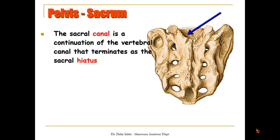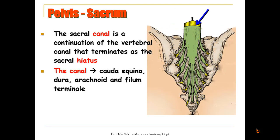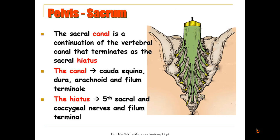The sacral canal is a continuation of the vertebral canal that terminates at the sacral hiatus. The canal transmits the cauda equina, which is a group of sacral and coccygeal nerves altogether, the dura mater, the arachnoid mater, and the filum terminale. The hiatus, or the end of the sacral canal, transmits the fifth sacral nerve, the coccygeal nerve, and also the filum terminale, which is attached to the back of the coccyx.